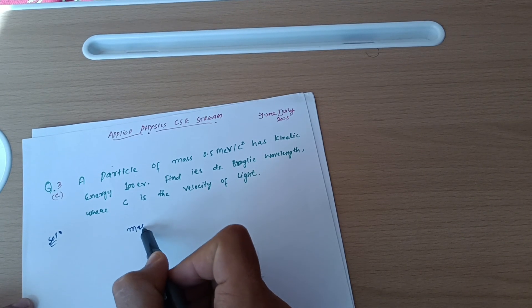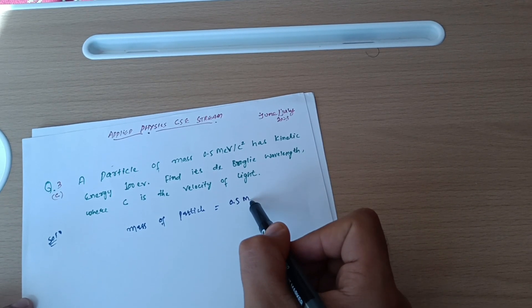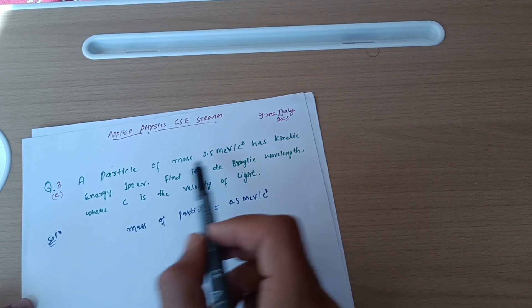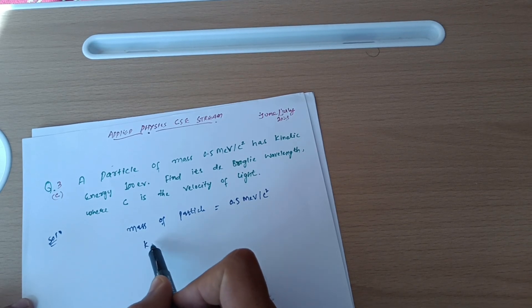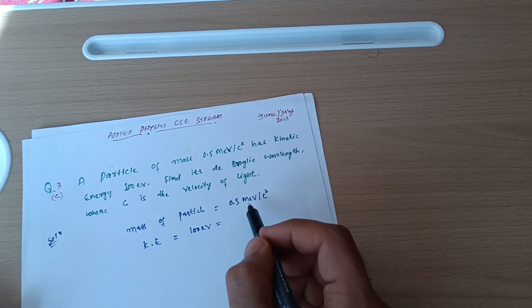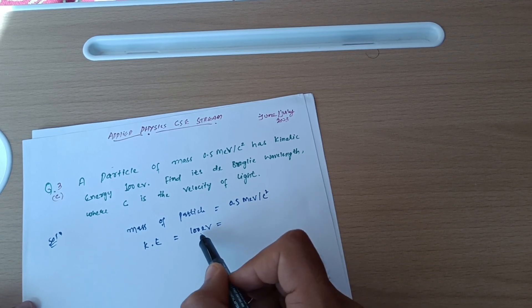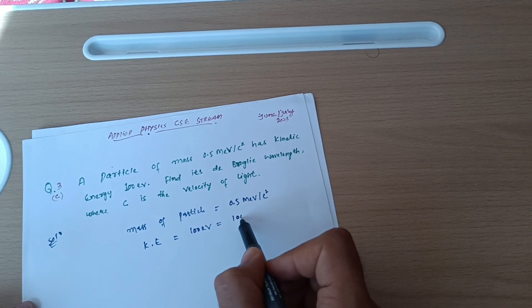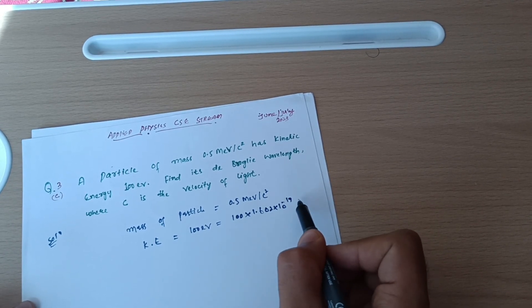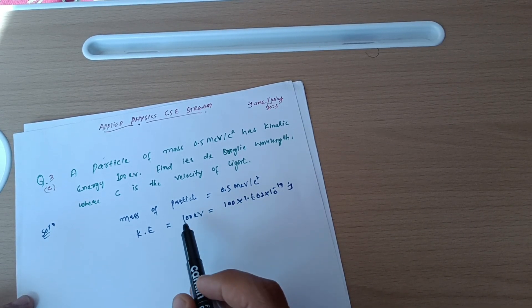First, write down the given data. Mass of the particle is equal to 0.5 mega electron volt per c squared. Kinetic energy is equal to 100 electron volt. We usually take energy in terms of joules, so conversion is very important. To convert electron volt into joules, multiply by 1.602 × 10⁻¹⁹ joules.